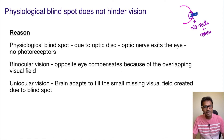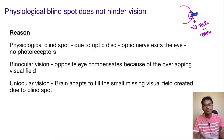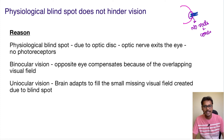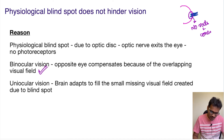The reason behind this: whenever we are seeing in binocular vision — using both eyes — the visual field of one eye overlaps with the visual field of the other eye. So the blind spot of the right eye will be compensated by the left eye's visual field. That is what happens in binocular vision.